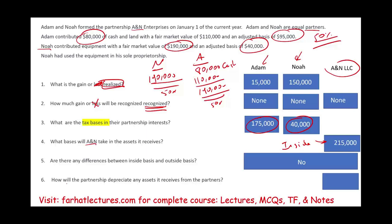The last question: how will the partnership depreciate any assets received from the partners? When a capital asset or Section 1231 depreciable asset is contributed, the adjusted basis transfers, the holding period transfers, and also the depreciation method transfers. Remember, Noah was using this equipment in his business — the same depreciation method Noah was using will be used by the partnership.